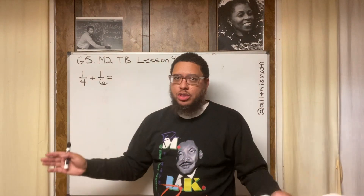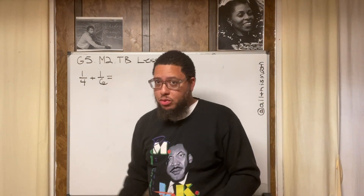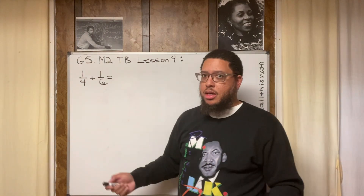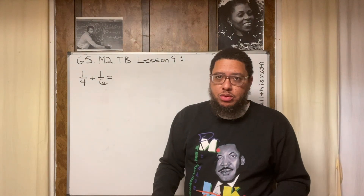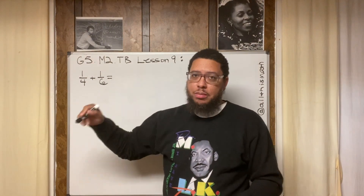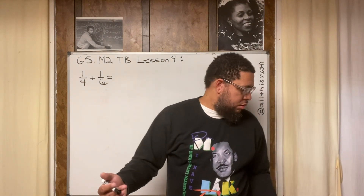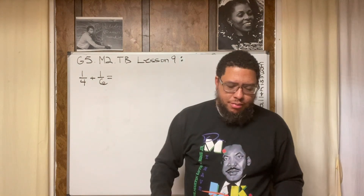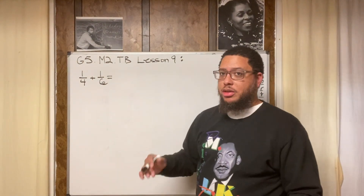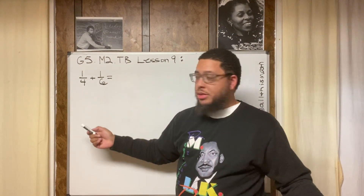Four is not a factor of six because there's no whole number in the universe that I can multiply by four and get six. I can multiply four by a decimal or fraction like 1.5 or three-halves and get six, but that doesn't make it a factor. It's only a factor if you can multiply by a whole number — no decimal, no fraction. Essentially, you need an integer. Four is not a factor of six because I can't multiply four by a whole number to get six.